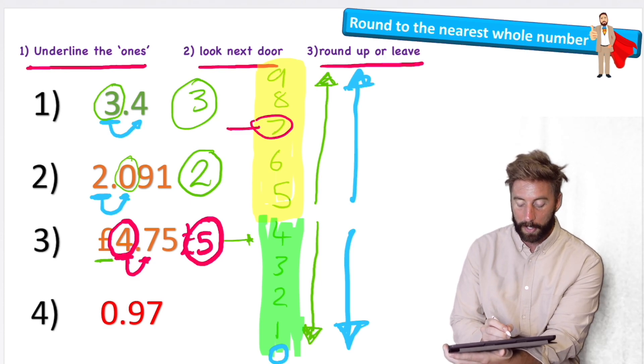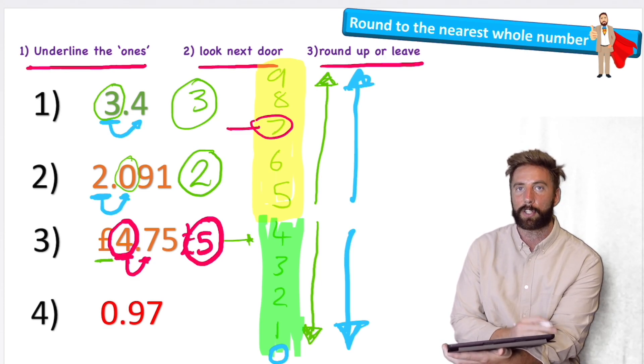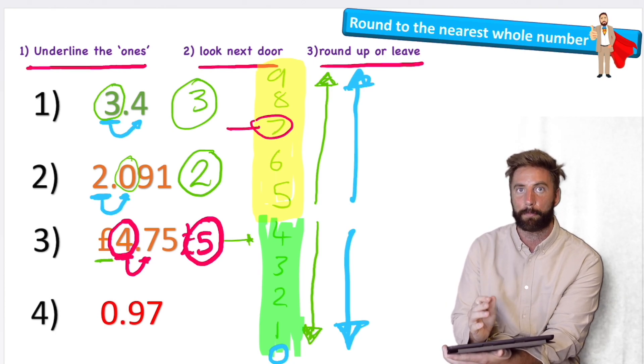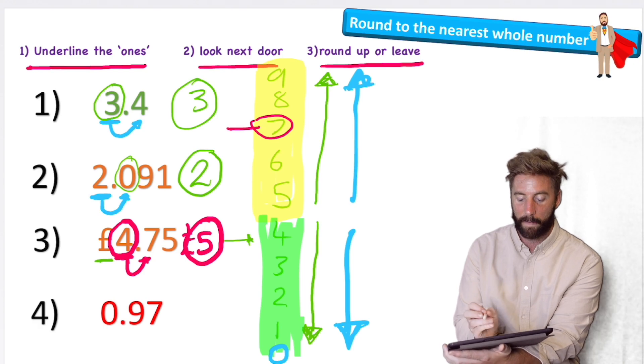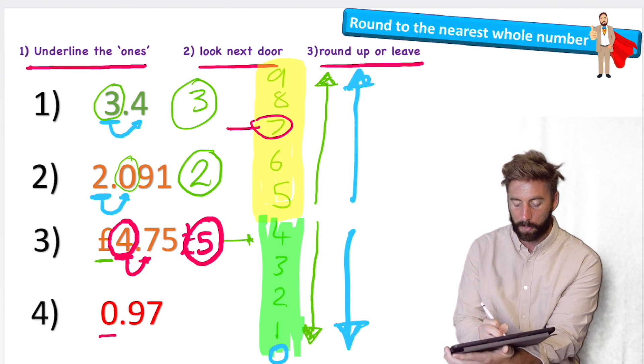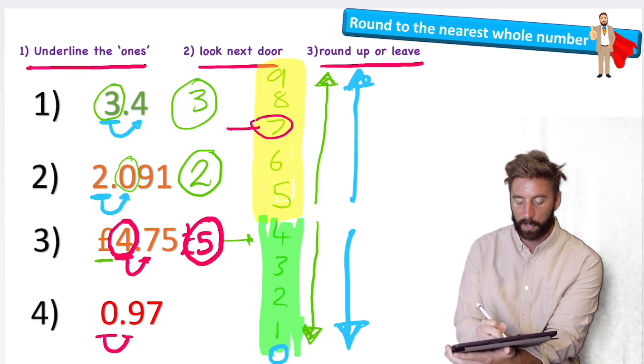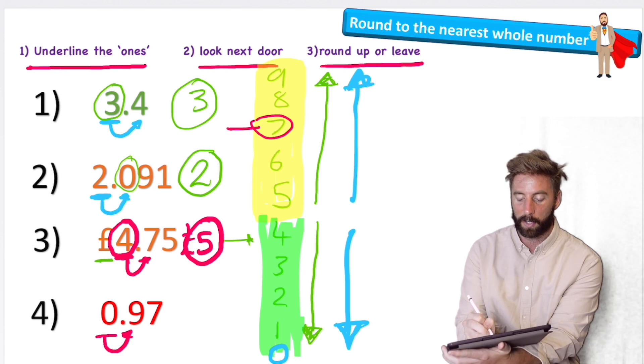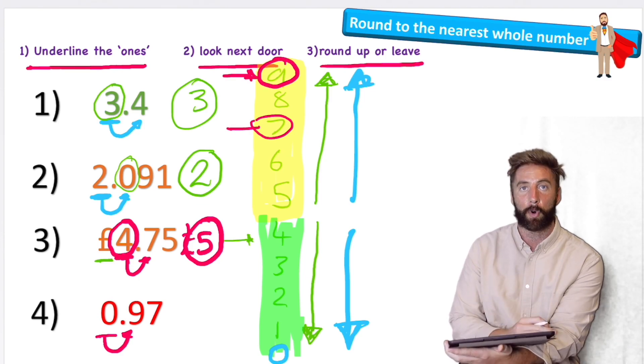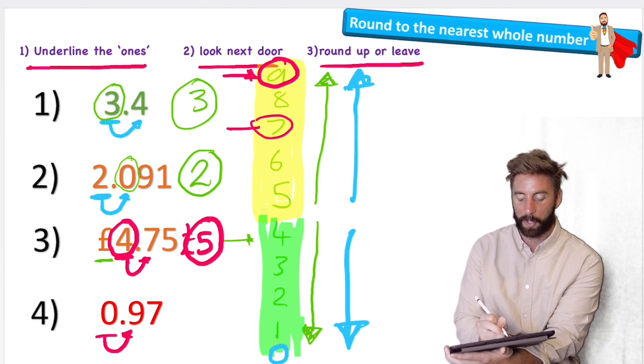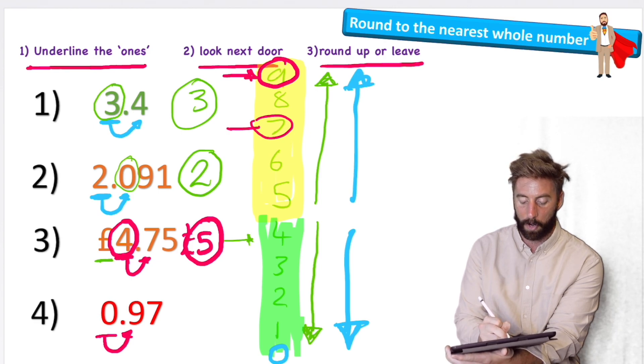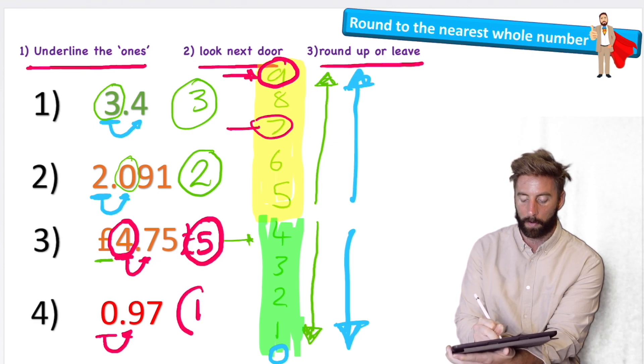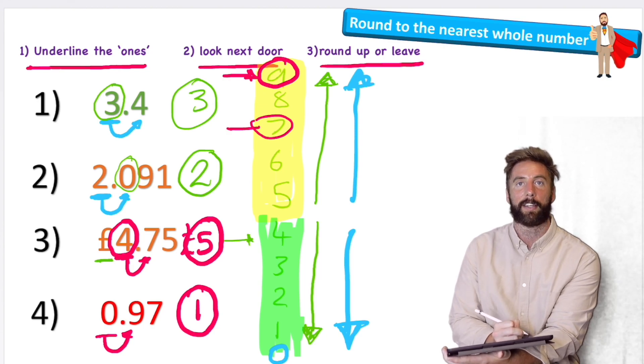Okay, question four. 0.97. Again, it looks a bit more tricky because we have the zero here. It might confuse us. But don't let it confuse you. Just simply follow the steps that we're learning. First things first, underline the ones. Look next door. We have a nine. Circle our nine. Here it is. Five or more. Let it soar. So I'm going to do that. And I'm going to soar my zero up to a one. So my answer is one.